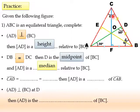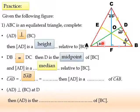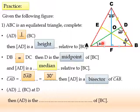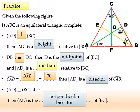Now let's look at the angles. We have angle CAD. CAD equals which angle? It must equal DAB, which is 30 degrees. So I can say that AD is the bisector of angle CAD. AD is perpendicular to BC at D, then AD is the perpendicular bisector of BC.